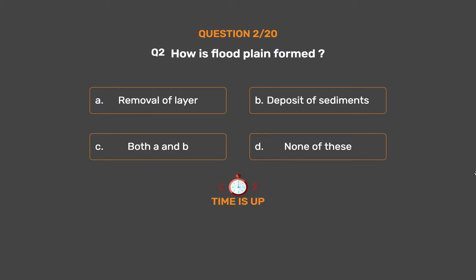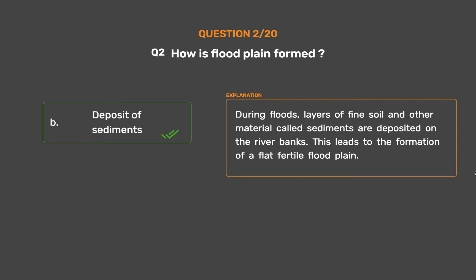The correct answer is Option B: Deposit of sediments. During floods, layers of fine soil and other material called sediments are deposited on the river banks. This leads to the formation of a flat fertile floodplain.